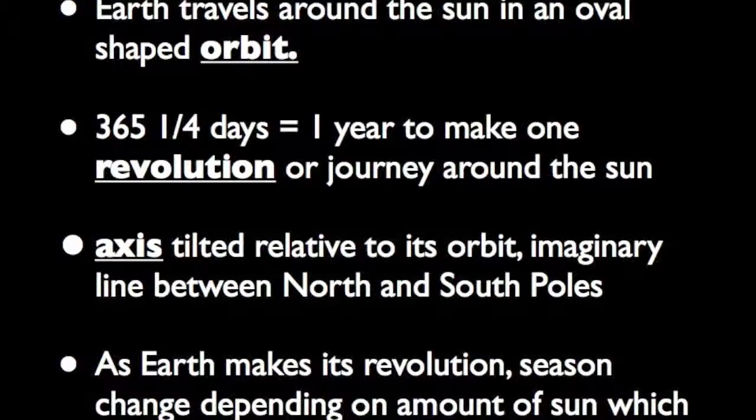Earth's axis, an imaginary line between the North and South poles, is tilted relative to its orbit. Therefore, as Earth makes its revolution, the sun shines most directly on different places at different times. That is why seasons occur.